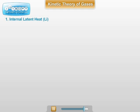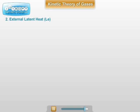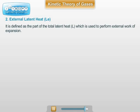The first is internal latent heat, Li. It is defined as the part of total latent heat L which is used to perform internal work against the intermolecular forces of attraction to increase the intermolecular distance. The second is external latent heat, Le. It is defined as the part of total latent heat L which is used to perform external work during expansion. Therefore, L equals Li plus Le.